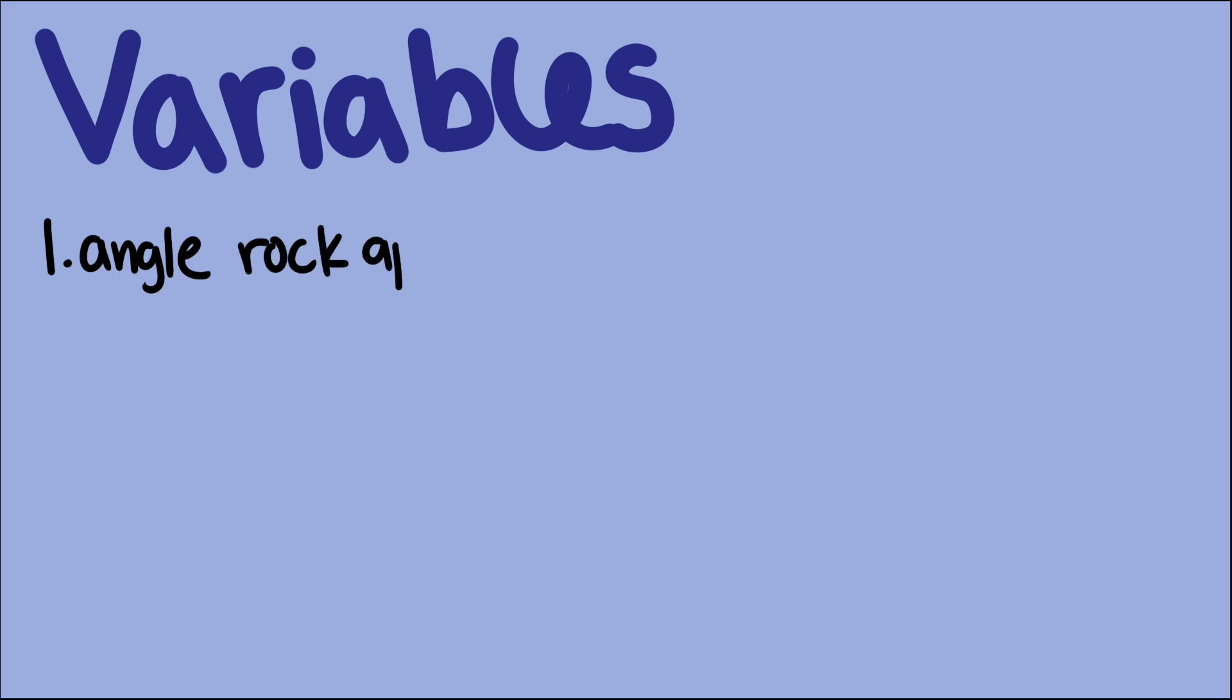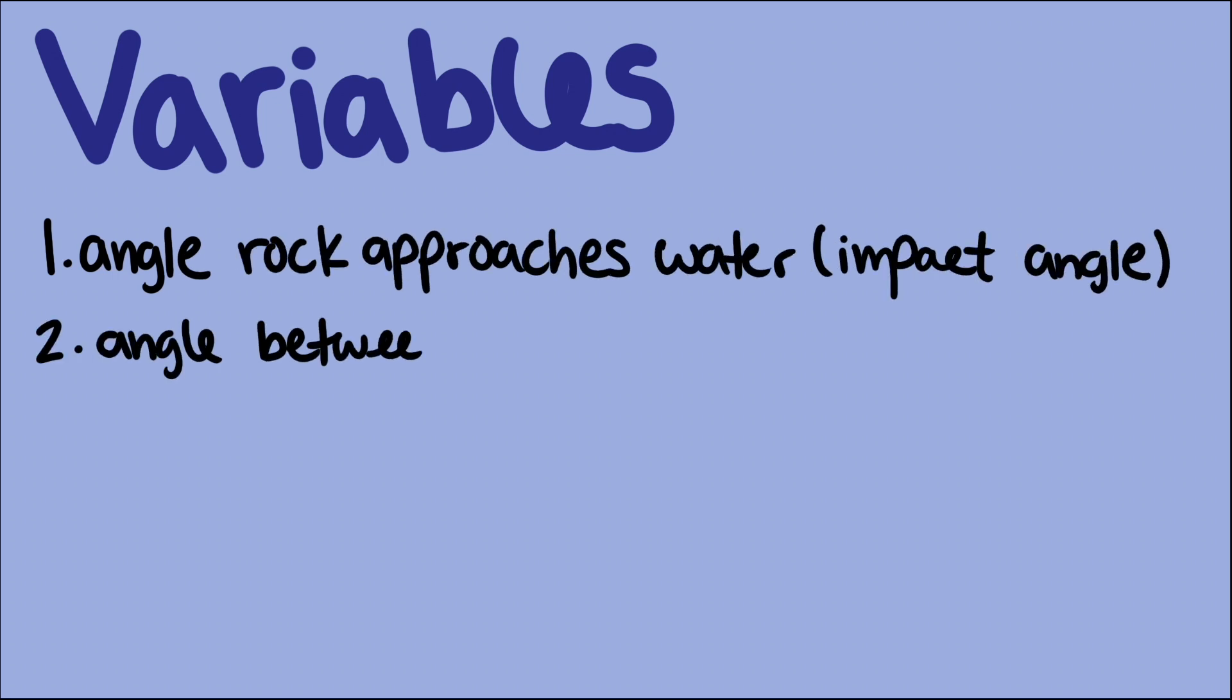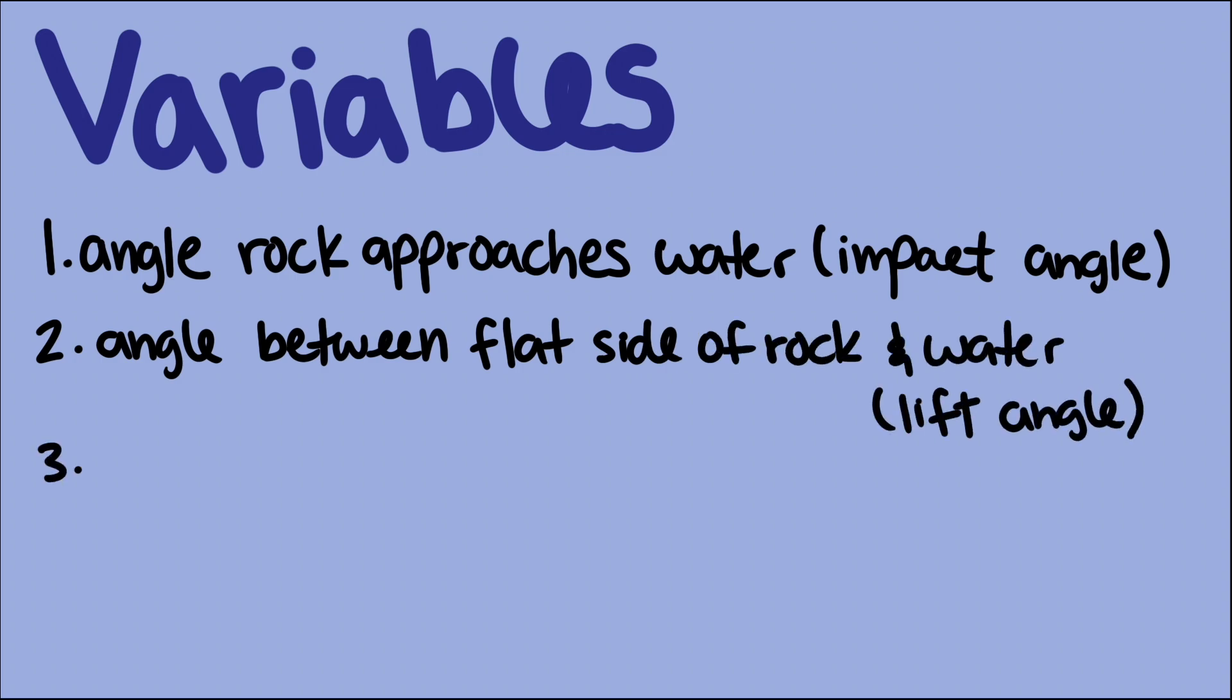There are a few different variables when it comes to skipping rocks. The angle the rock approaches the water, what I would call the impact angle, the angle of the flat surface of the rock that's going to touch the water, what I call the lift angle, and the velocity of the rock.